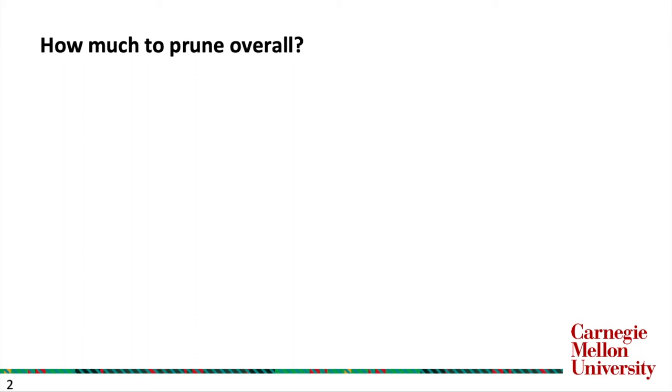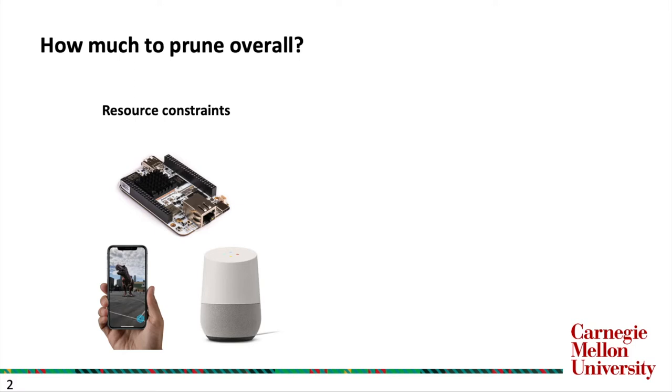Let's first consider the first question, how much to prune overall? If we were to consider a resource constraint setting, for example, deploying deep nets onto microcontroller, mobile phone, and embedded devices. In these settings, how much to prune overall is straightforward as it is determined by the constraints imposed by these devices.